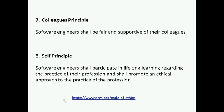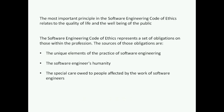The most important principle in the software engineering code of ethics relates to the quality of life and the well-being of the public that is affected by the technology and the advancements that software engineers are responsible for and contribute to society. The software engineering code of ethics represents a set of obligations on those within the profession. The sources of those obligations are the unique elements of the practice of software engineering, the software engineer's humanity, and the special care owed to people affected by the work of software engineers.